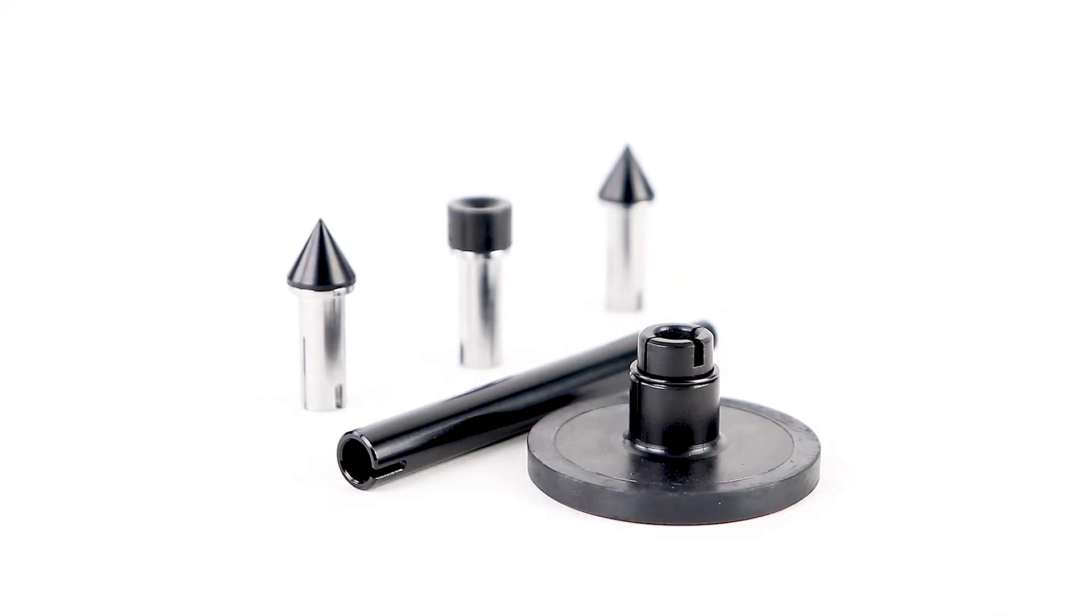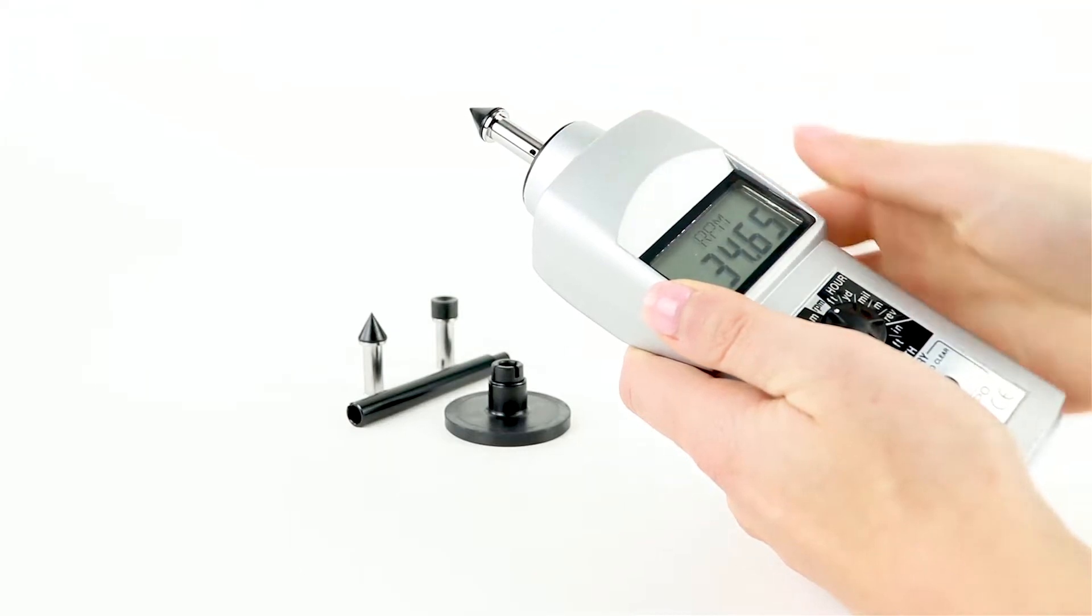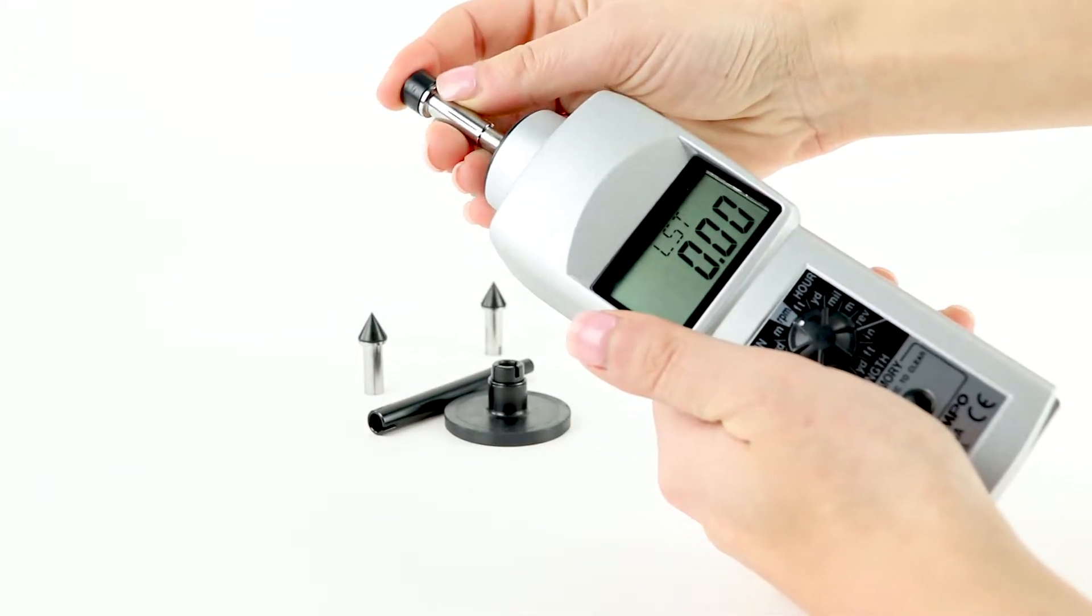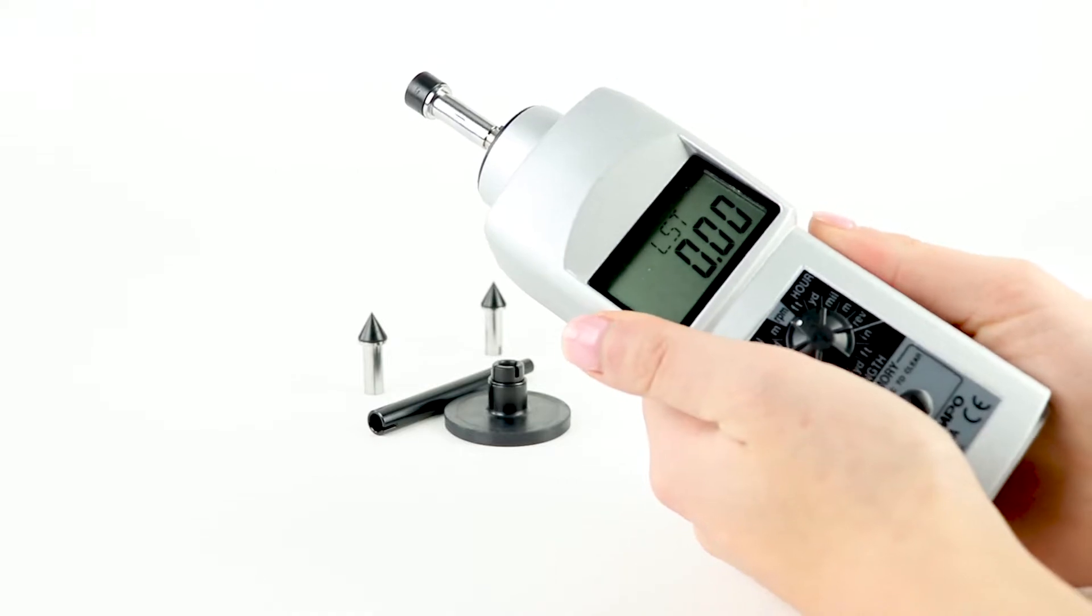When measuring RPM, mount the cone tip adapter or funnel tip adapter to the end of the shaft and place in contact with the rotating shaft or element.